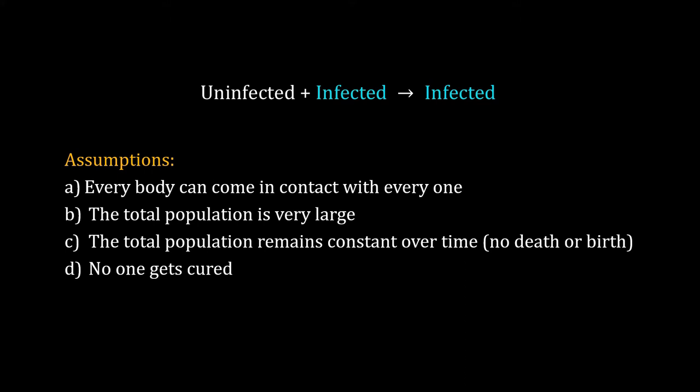The first assumption is everybody can come in contact with everyone. In the last video, we discussed that for any ODE-based model we have to assume that the system is homogeneous. So in this case, if the system has to be homogeneous, then every person has to come in contact with the other person so that uninfected and infected persons can mingle with each other.